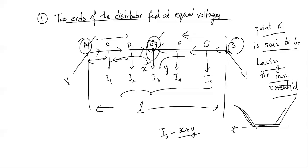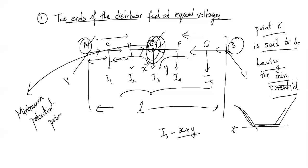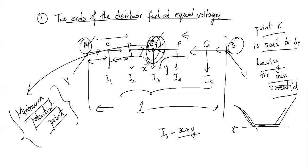This point is generally called the minimum potential point. Each and every loading condition will have such a minimum potential point. The point where the potential drop is at its lowest is considered to be the minimum potential point. This analysis applies for the equal voltage case.